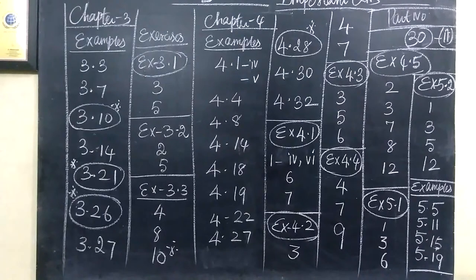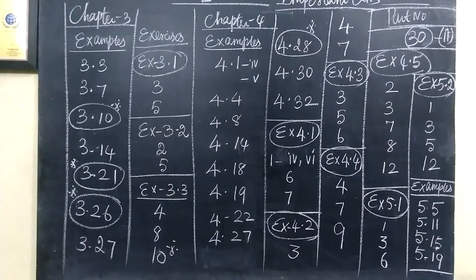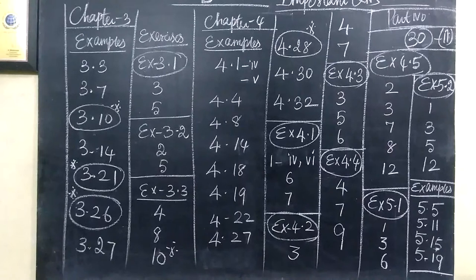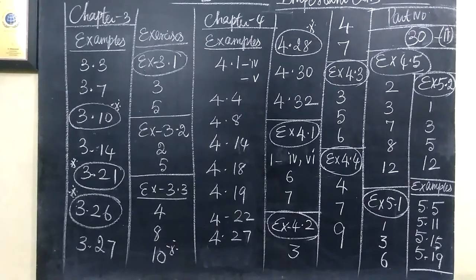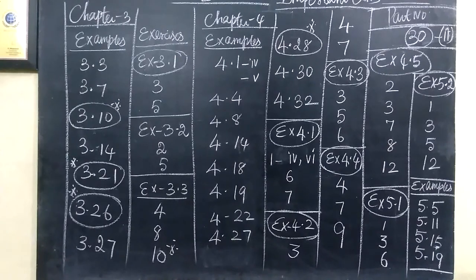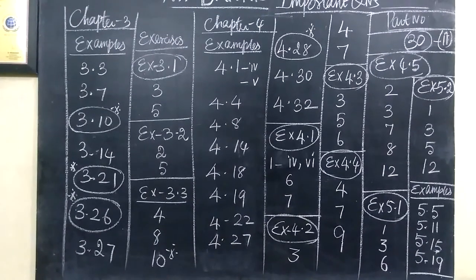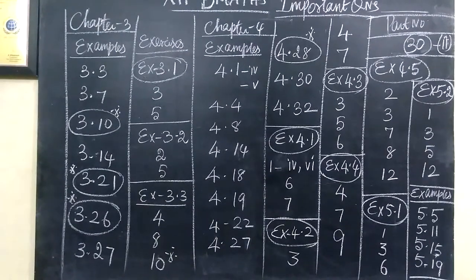4, then subdivision 5, then 4.4, 4.8, then 4.14, 4.18, 4.19, then 4.22, 4.27 and 4.28 more important.